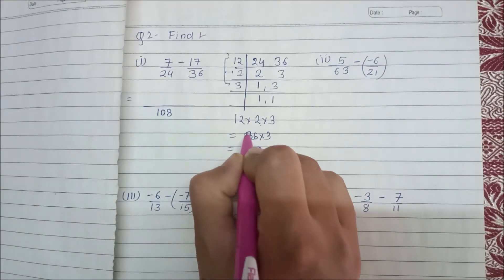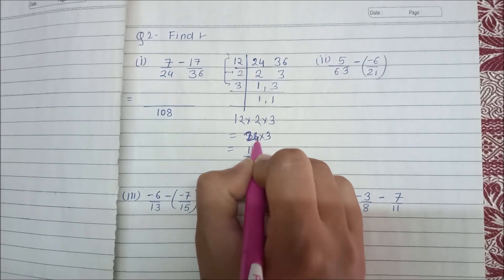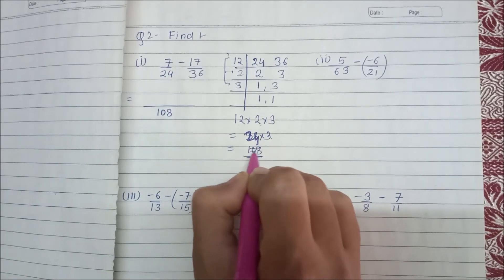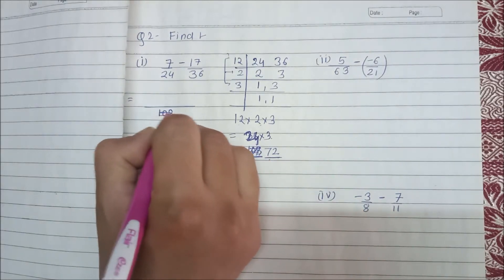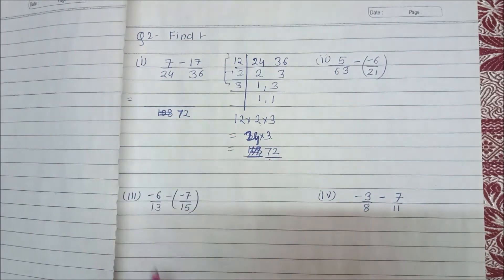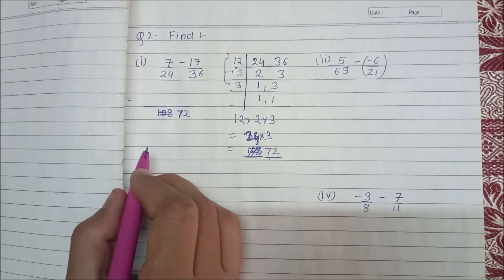So what is LCM? We will write down here. Here is 12 times 2 is 24, and 24 times 3 is 72. 72 will be our LCM which we will write here, that is 72.